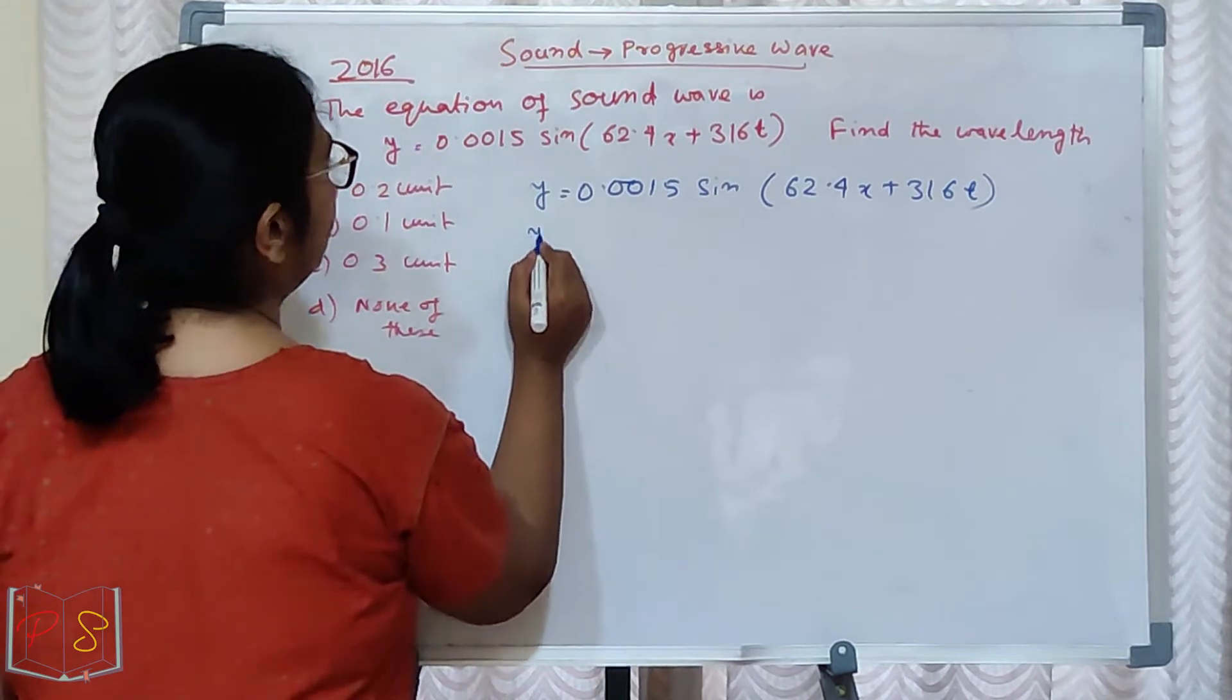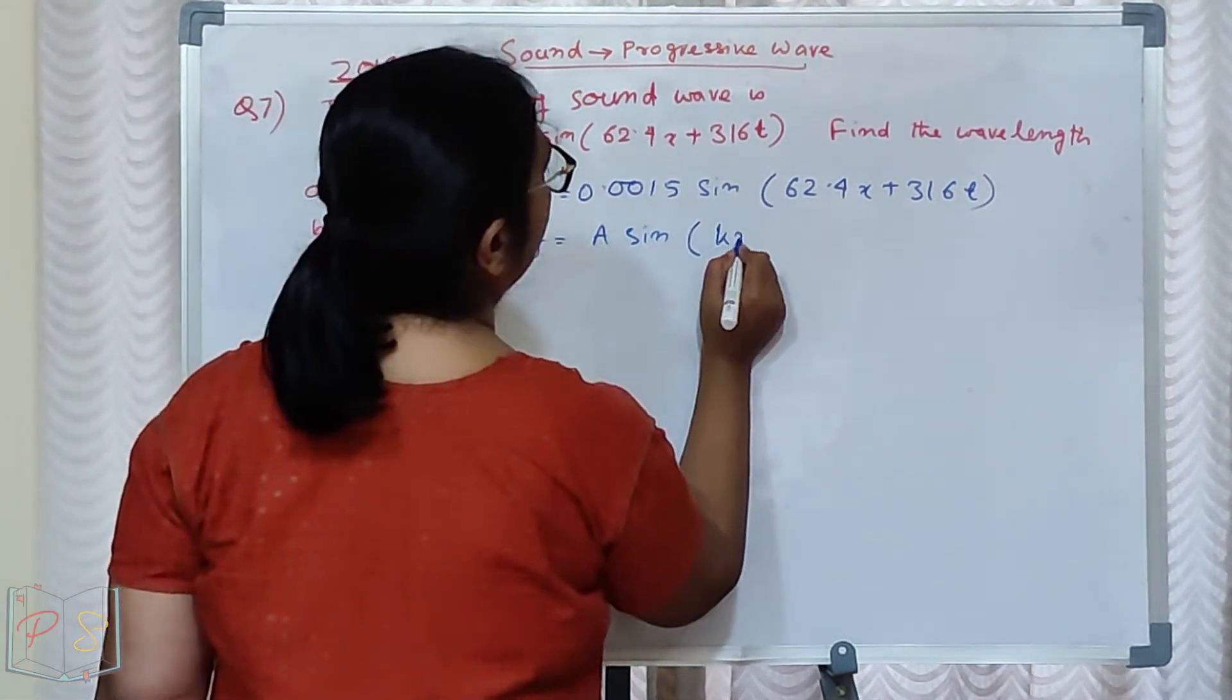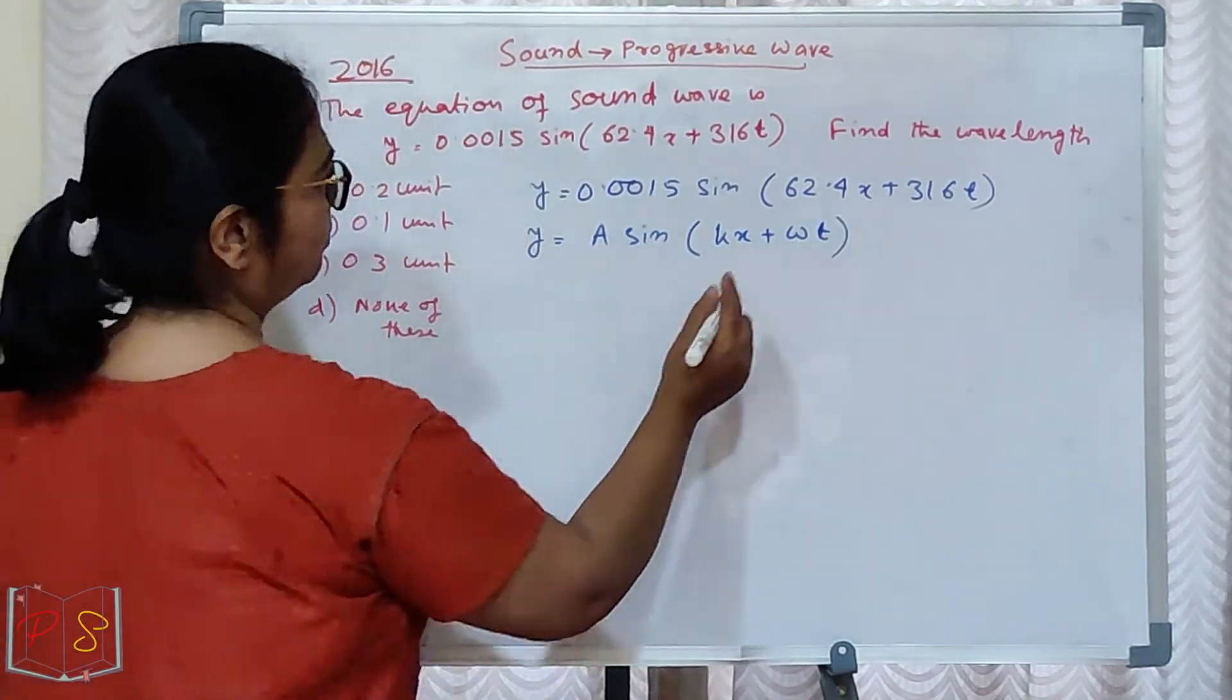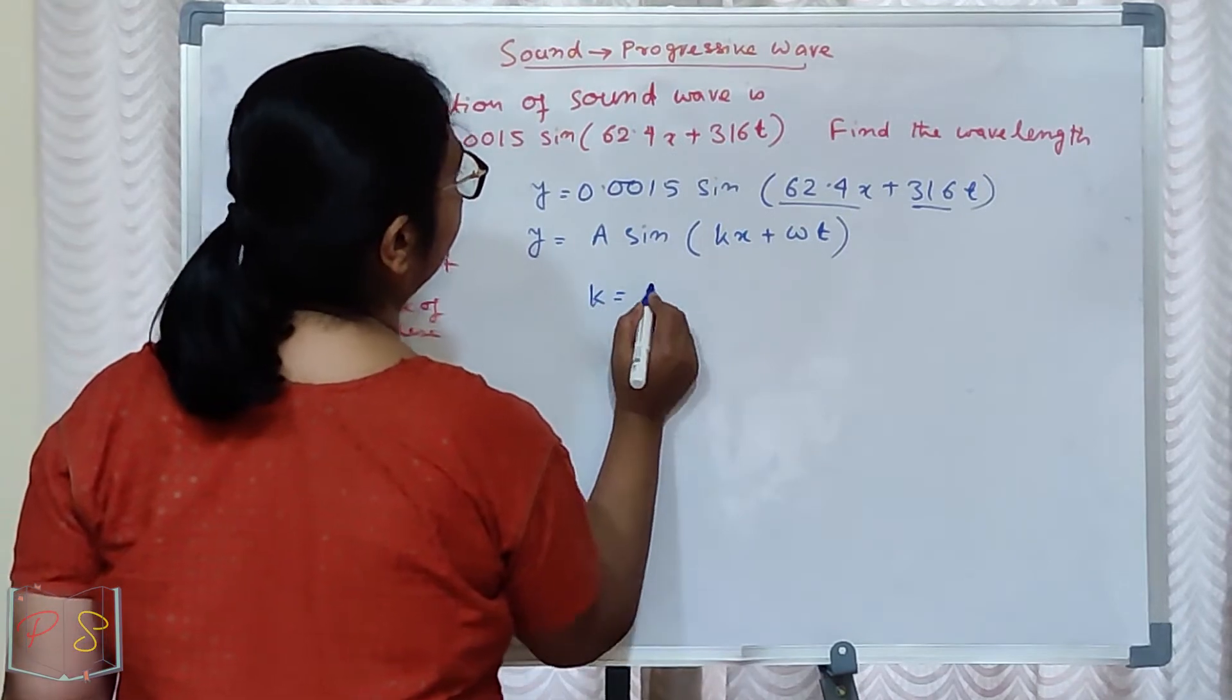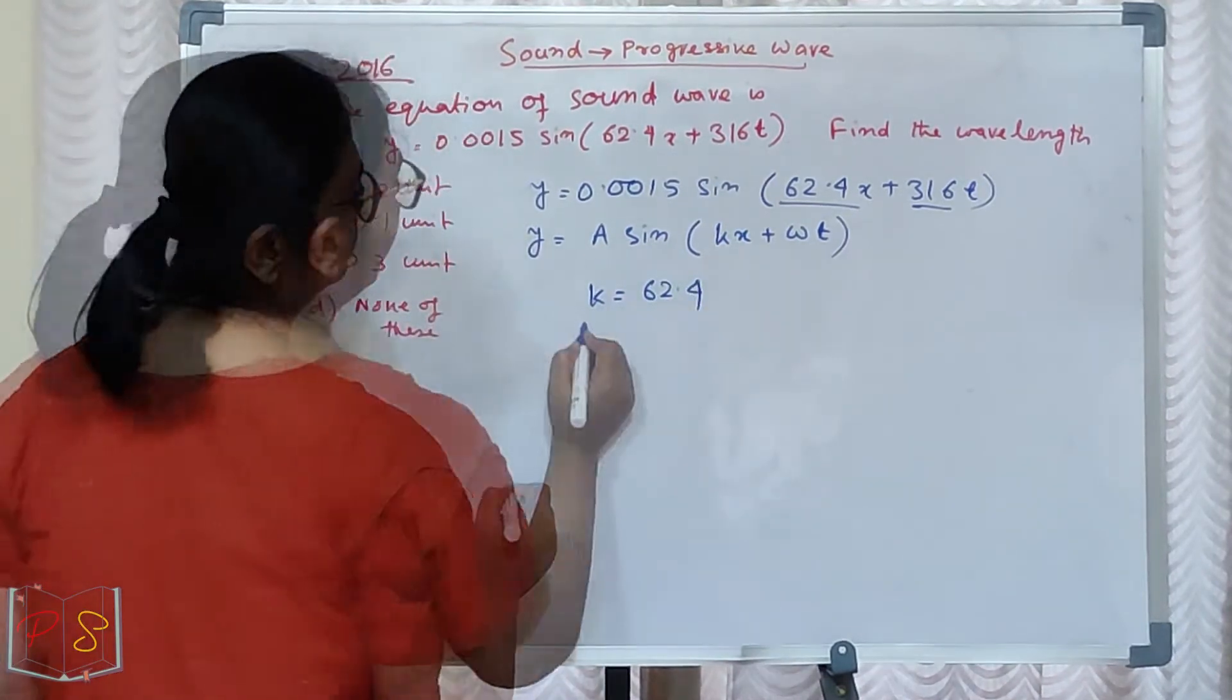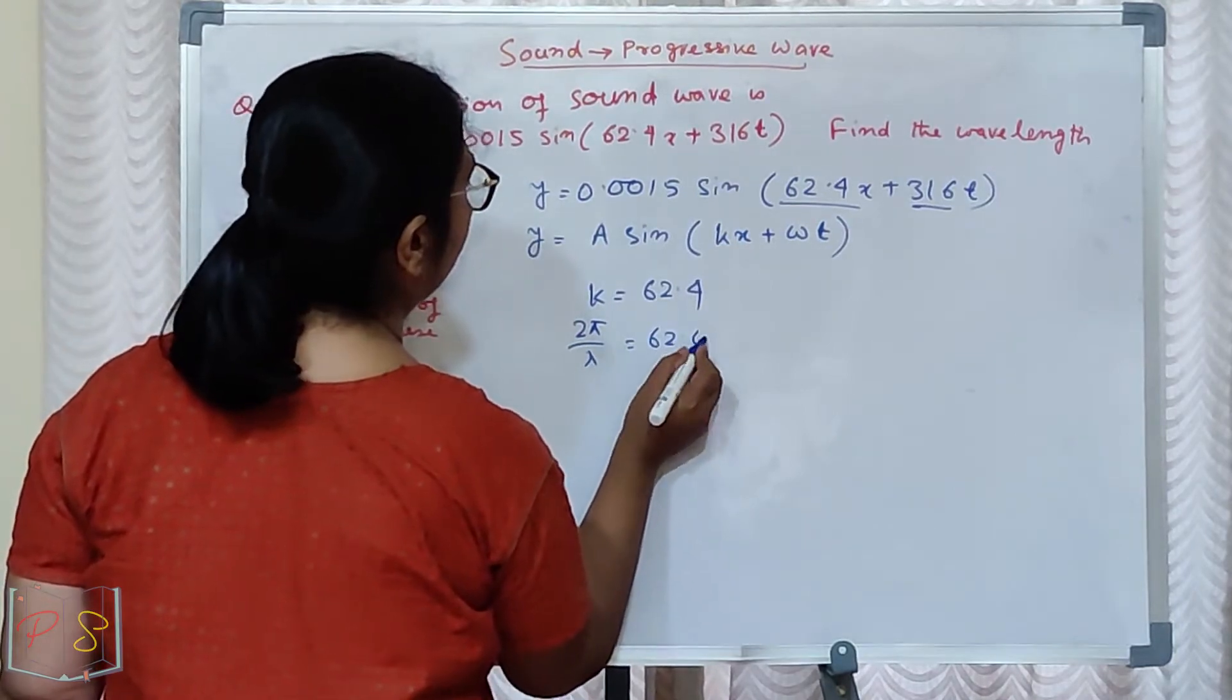Our standard equation, remember: A sin of k x, k x omega t. Match with K. K equal to 62.4. K means 2 pi by lambda equal to 62.4.